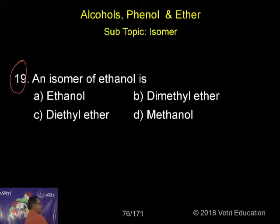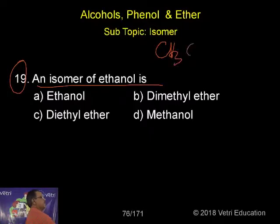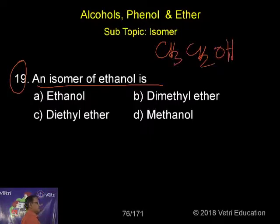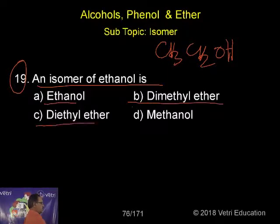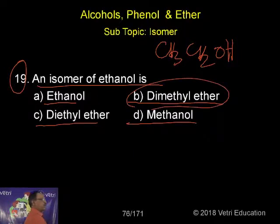Question 90: Find an isomer of ethanol. Ethanol has the formula CH₃CH₂OH. The options are: A) ethanol, B) dimethyl ether, C) dimethyl ether, D) methanol. Dimethyl ether has two carbons, the same as ethanol, which means this compound can be the isomer.